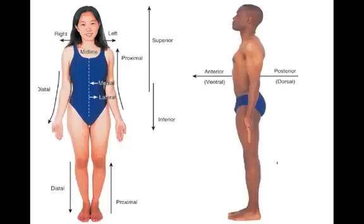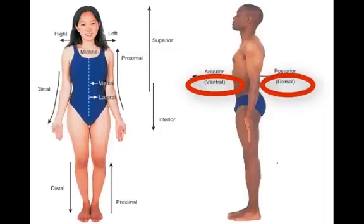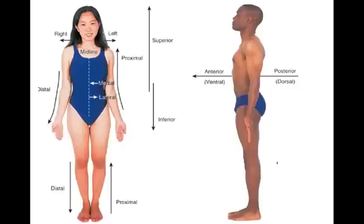There are other terms that mean the same thing and are used interchangeably with anterior and posterior. They are ventral and dorsal. Ventral is the same as anterior while dorsal is the same as posterior. So try to remember that if you see these terms being used that they are the same.